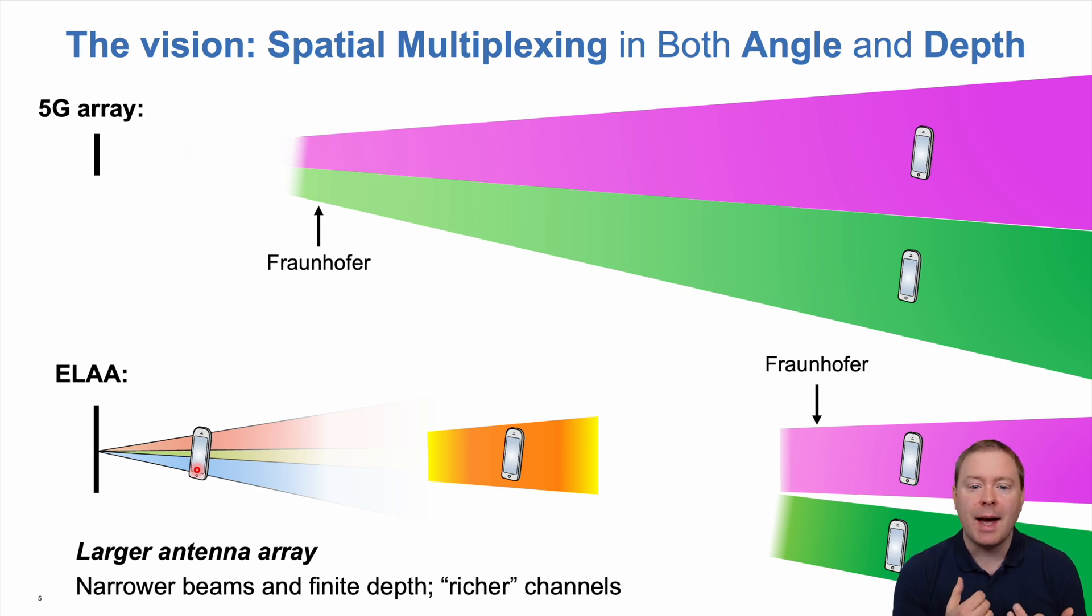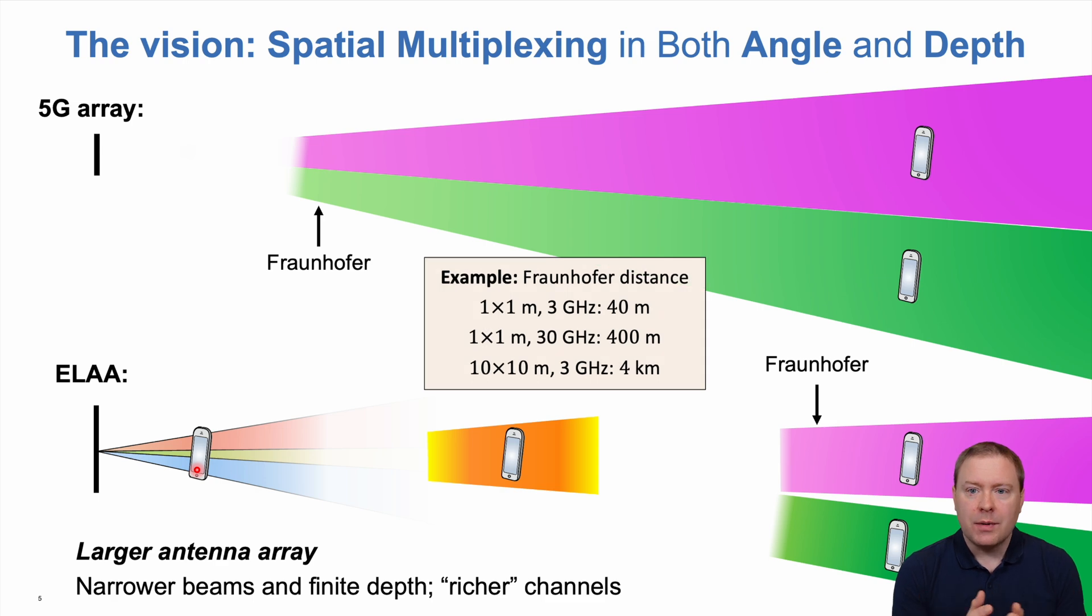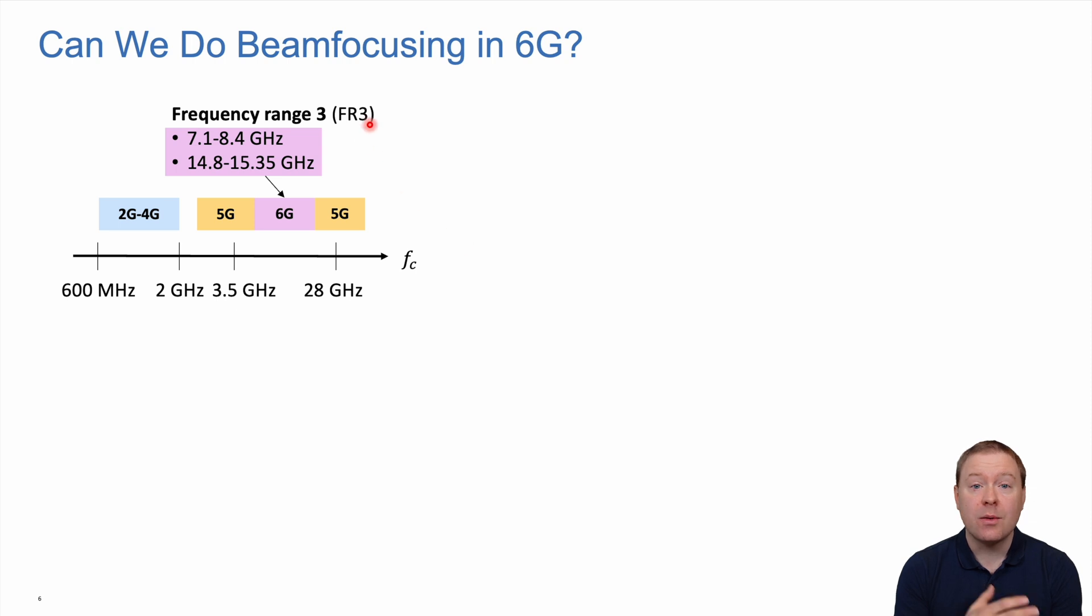The Fraunhofer distance can be computed for different setups depending on array size and frequency. In a typical 5G scenario, it might be 40 meters. At higher frequency, it can be 400 meters, and with a really large array, many kilometers.